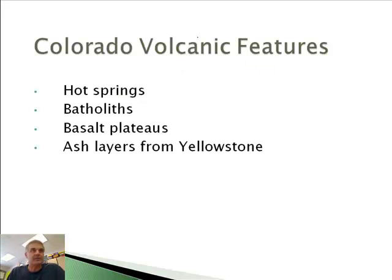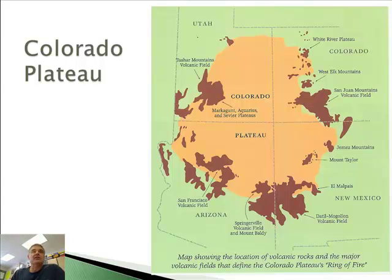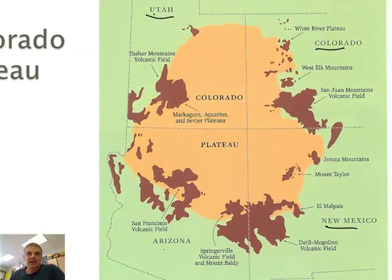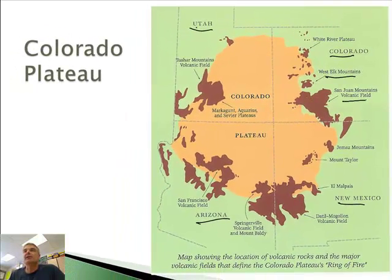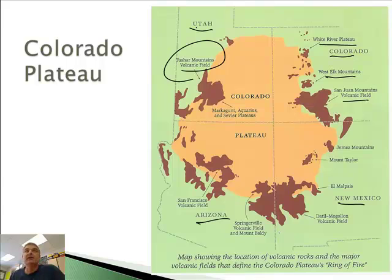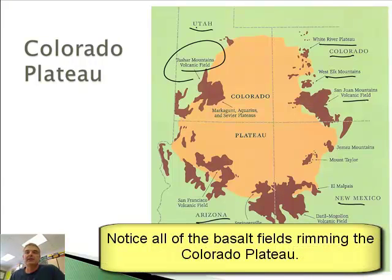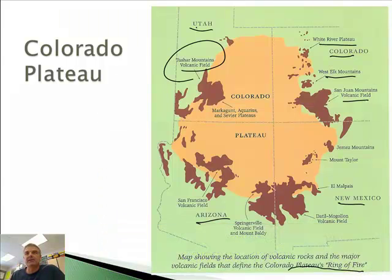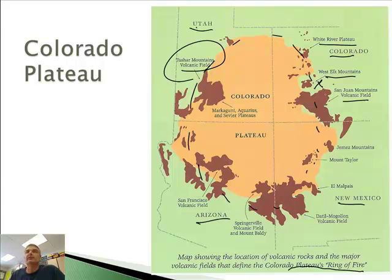Let's talk about some interesting geologic features we find in Colorado. Here's a picture of the Colorado Plateau, which actually extends across Utah, Colorado, New Mexico, and Arizona — so it's not just Colorado, but it's called the Colorado Plateau. We see some interesting volcanic activity and volcanic fields around where we are. The West Elk Mountains, the San Juan Mountains, the White River Plateau. Over in Utah we also see volcanic activity. The little red things are basalt fields — it's kind of called the Colorado Plateau's Ring of Fire. We probably live about right there.